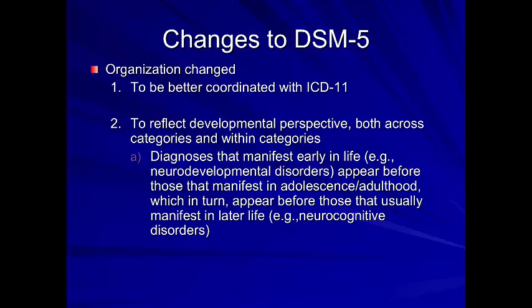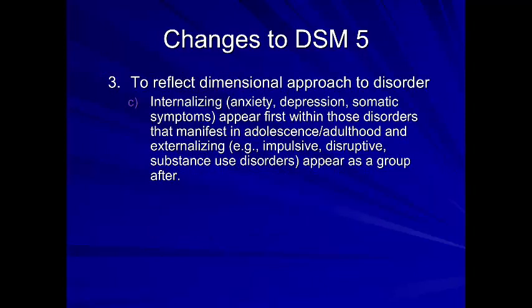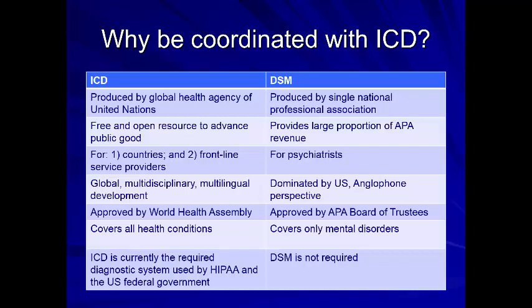The DSM-5 reflects more developmental perspectives, both across and within categories. Diagnoses that manifest early in life — like neurodevelopmental disorders and autism spectrum disorders — appear first in the book, while those that develop later, like depression and anxiety, come later. It also reflects more of a dimensional approach: internalizing symptoms such as anxiety, depression, and somatic symptoms appear first, followed by externalizing disorders. The goal of coordinating with the ICD is that the more we can communicate globally about these things, the better — we don't want research that is only North America-centric.